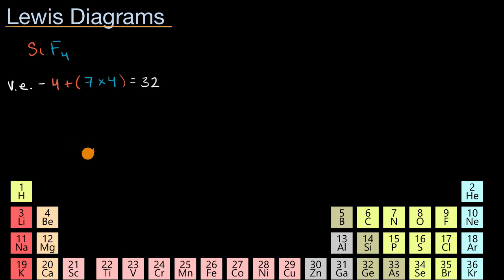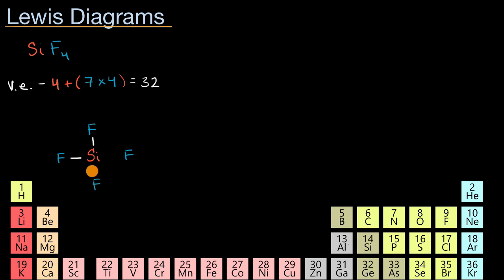So we would put silicon at the center and make fluorine a terminal atom on the outside. Let's put silicon in the center, then place one fluorine on each side — top, bottom, left, and right. Now for simplicity, let's say we just have single bonds between the silicon and each of the fluorines.